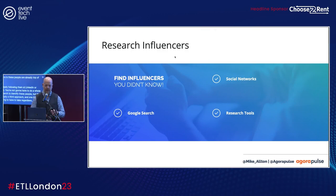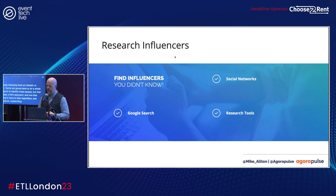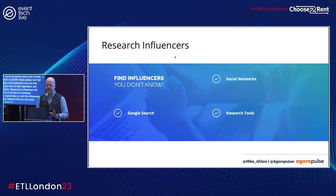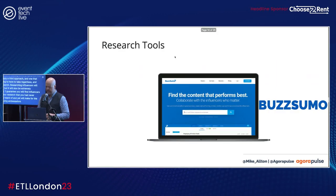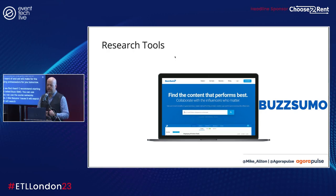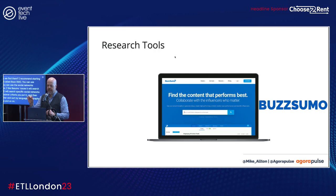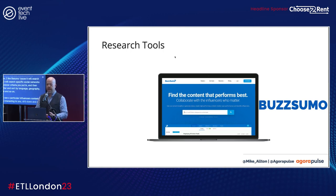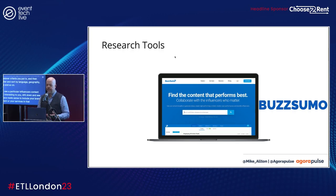A third approach — and one you'll have to take regardless — is research. Researching influencers will take time, but it will also be extremely rewarding. I guarantee you will find influencers through your research that you had never previously heard of, and yet will make for the most amazing ambassadors for you. I recommend starting with a tool called BuzzSumo. You can use Google or the social networks themselves, but I like BuzzSumo because it will search the web and specific social networks by whatever criteria you input, then you can filter and sort by language, geography, and time frame. When you see an influencer's content that looks interesting, drill down and see if it would have made sense to include your brand or event in that content. If so, that's an influencer you'll want to follow up with.